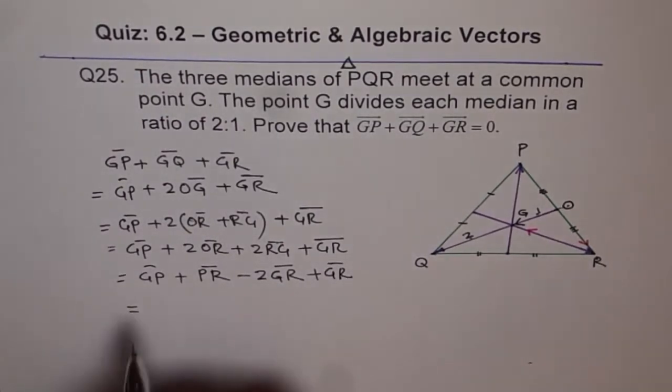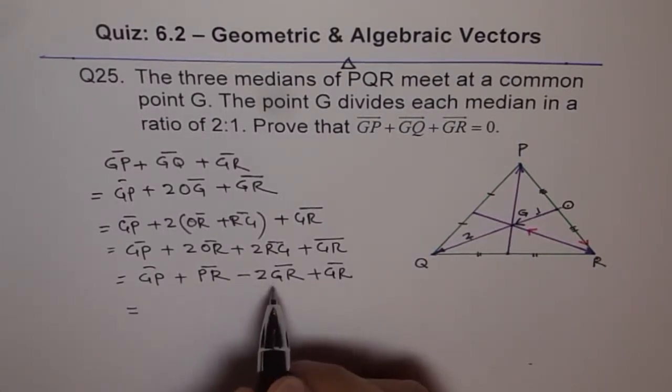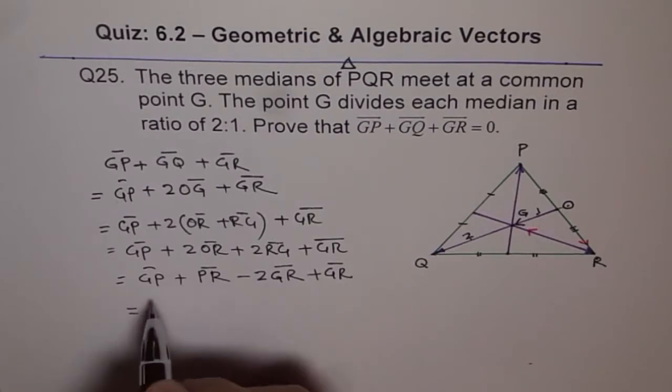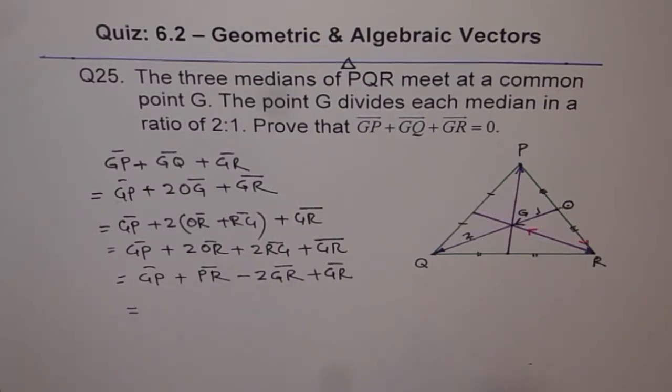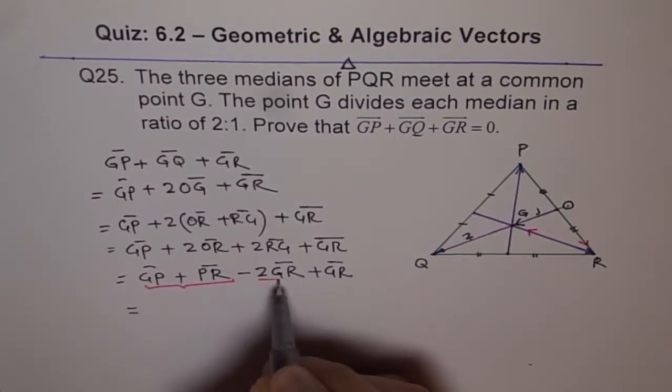Now, we are left with GP plus PR, that is GR. And here we have minus 2GR plus GR, which is minus GR. So let's do it in step by step. So we will write this as, we will combine these two and these two.